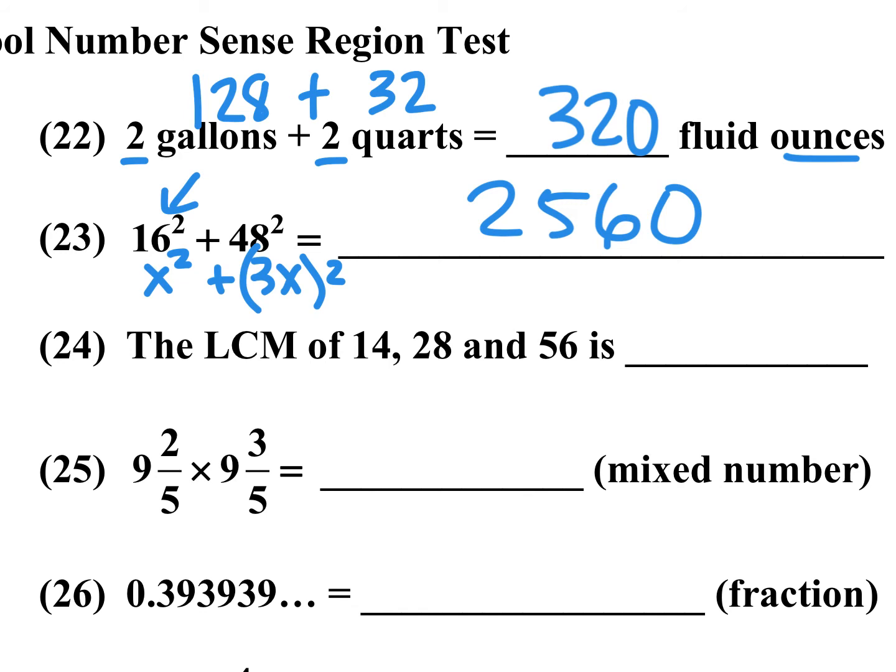Number 24, what is the LCM of 14, 28, and 56? Well, these are all multiples of 14. This is 14 times 2, this is 14 times 4, and so the LCM is going to be 56, since they all go into 56. So for this one, it's just 56.